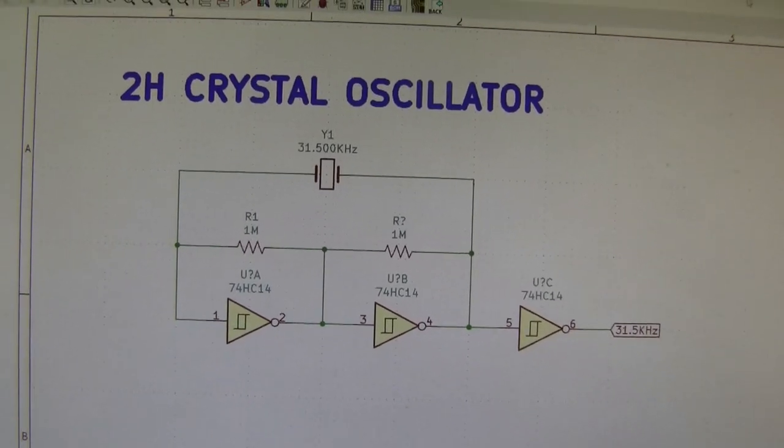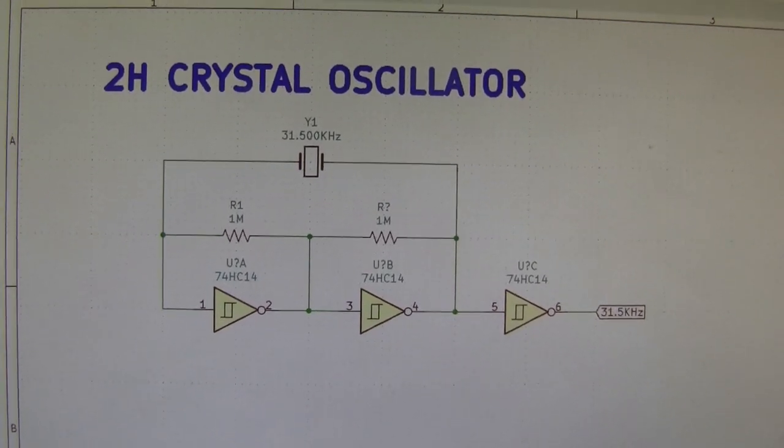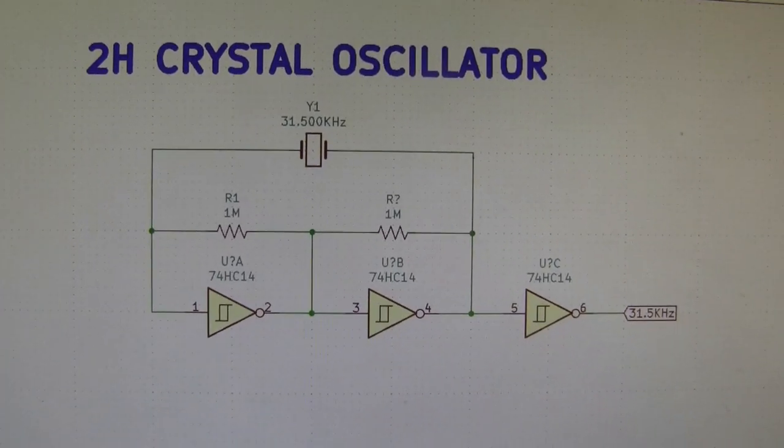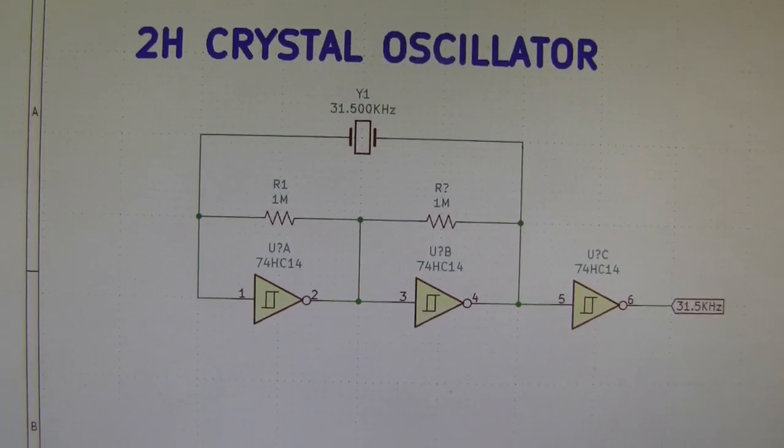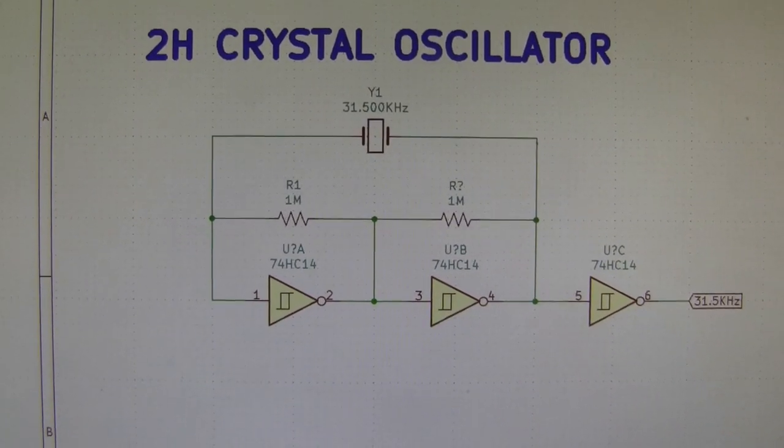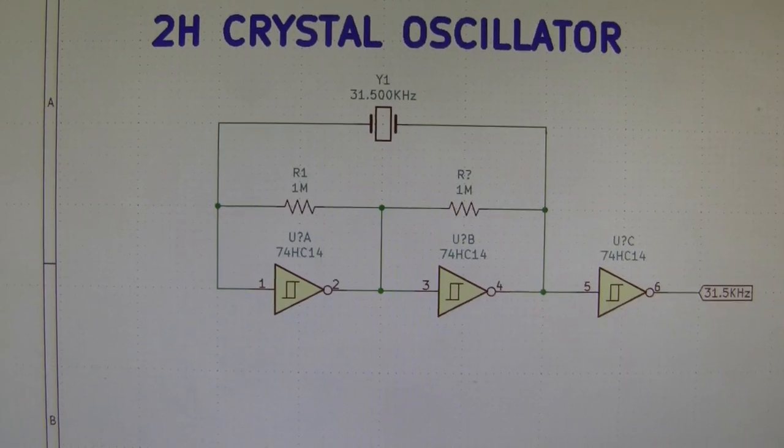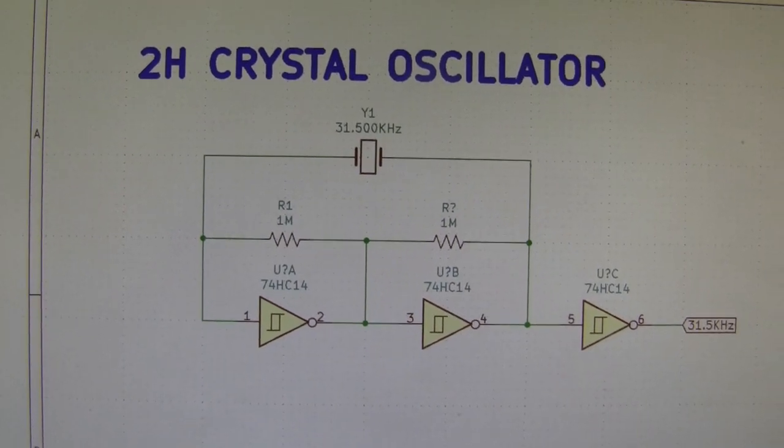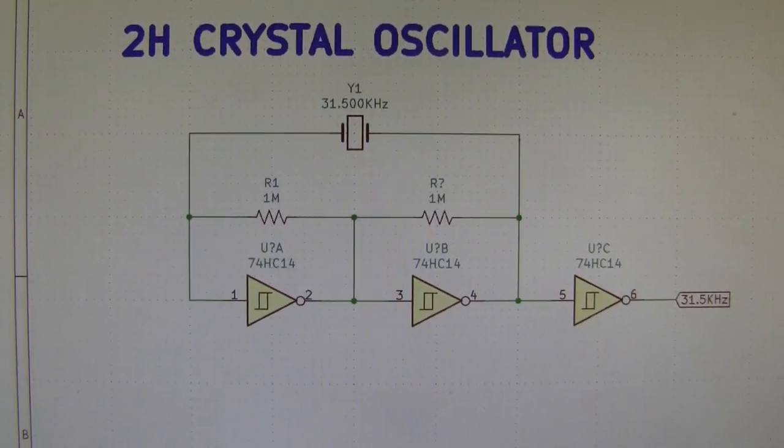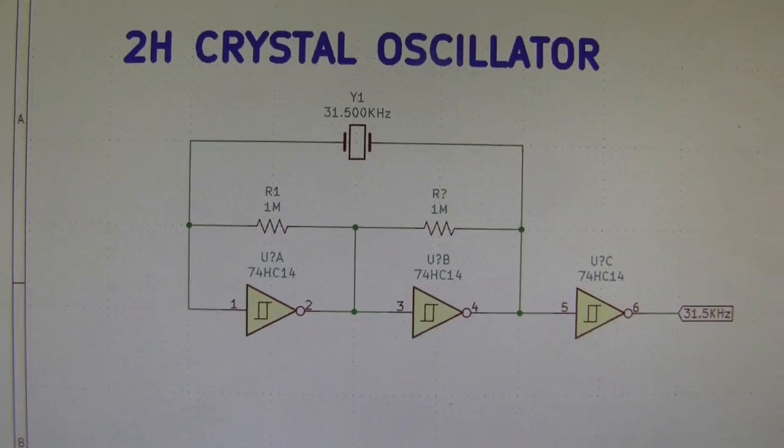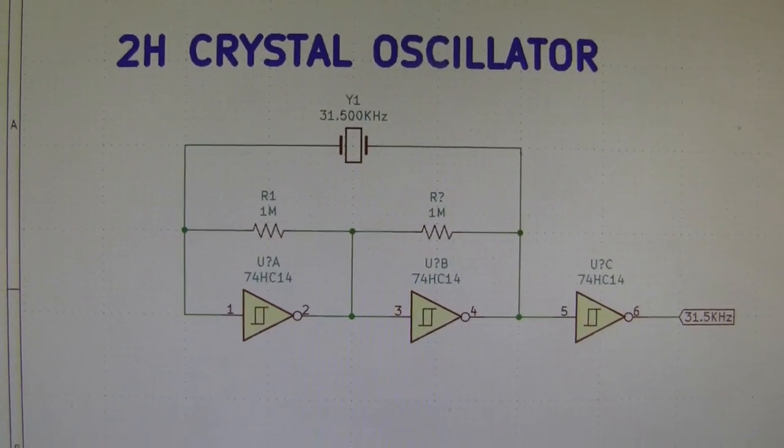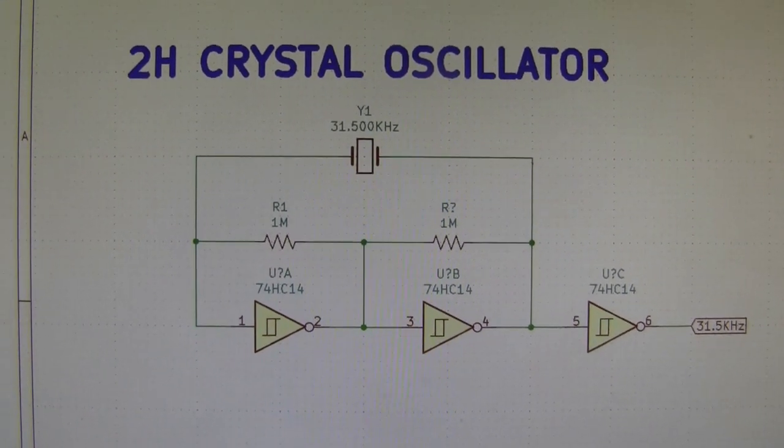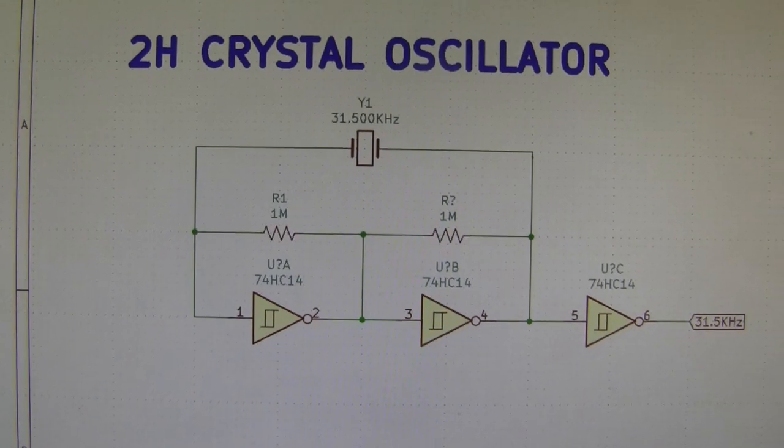This is the crystal oscillator circuit. It couldn't be simpler. It's based on the 74HC14 hex Schmidt trigger inverter chip. The two 1 meg resistors bias the input pins into the middle of their operating region, and the crystal provides both the phase delay from the output back to the input and the frequency resonant portion of the circuit. It's very simple. It could possibly be better with the addition of some capacitors, which I'm still experimenting with.